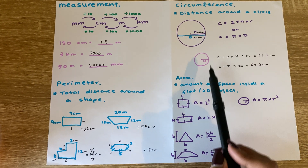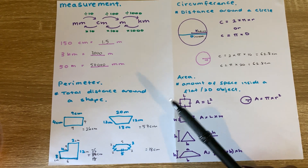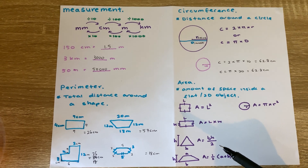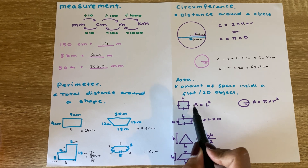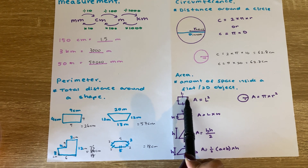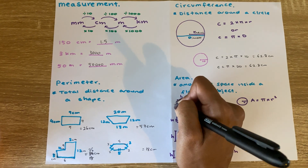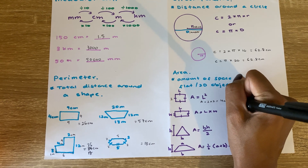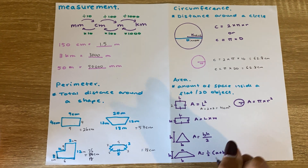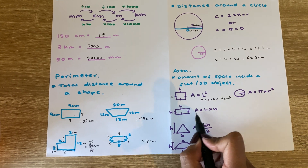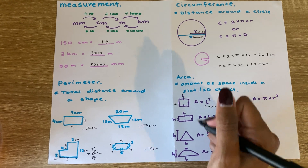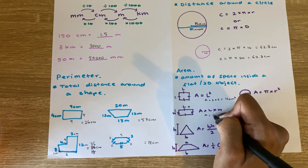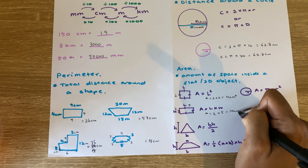Where perimeter is the distance around the shape, area is the amount of space inside a shape. For a square, the formula is length times length, or L squared. If the side is 2, the area is 2 times 2 equals 4 centimeters squared. For a rectangle with sides of 5 centimeters and 2 centimeters, area equals length times width: 2 times 5 equals 10 centimeters squared.